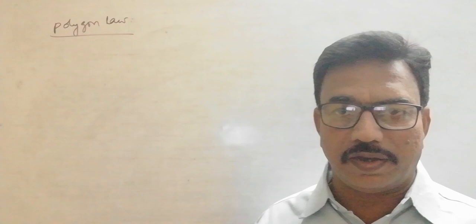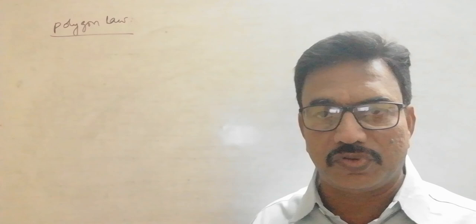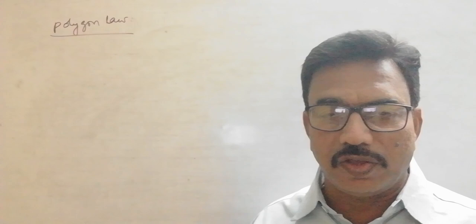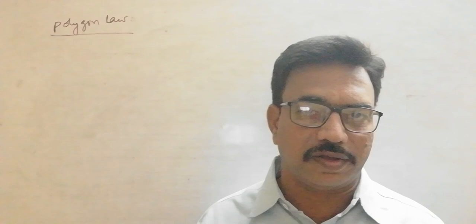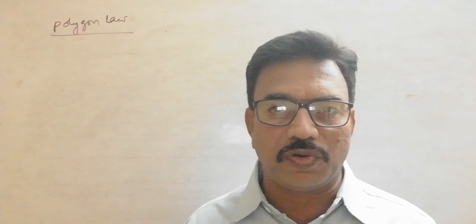In an earlier video, I explained the process of finding the resultant of two vectors — that is, composition of vectors — using triangle law and parallelogram law. When the number of vectors is two, we can use either triangle law, which is a graphical method, or parallelogram law, which is an analytical method, to find the magnitude and direction of the resultant of two vectors.